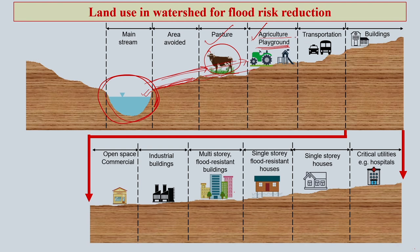After agriculture land, ideally we should have transportation and roads, and finally buildings start — any kind of building: office, school. You can see in the picture here what different kinds of buildings there are and how they should be placed.